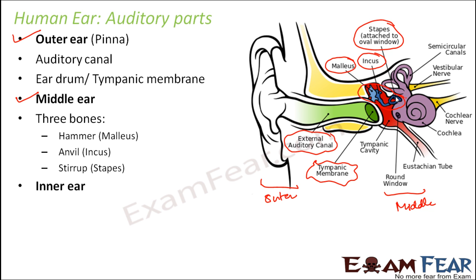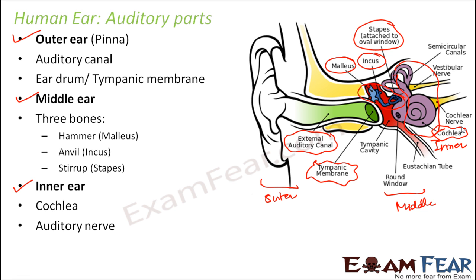Going even deeper inside, you reach the inner ear — the purple-colored structure you see here. In the inner ear there is a coiled structure called the cochlea. Beyond that you have the auditory nerves, which come out of the inner ear and connect the ear to the brain.